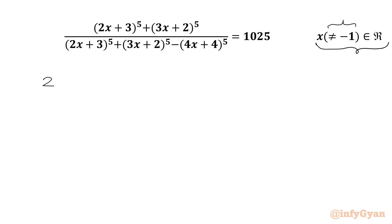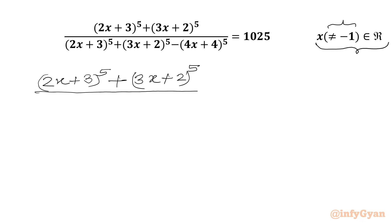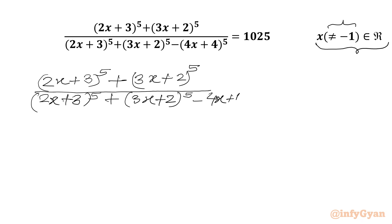I will write our equation: (2x+3)^5 + (3x+2)^5 over (2x+3)^5 + (3x+2)^5 - (4x+4)^5, and the right-hand side is equal to 1025.